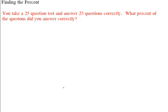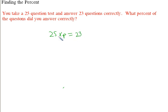Now over here — the last time I did this, I messed this up, so you really do need to be careful and pay attention. If you're trying to figure out the percent: you take a 25-question test and answer 23 questions correctly. What percent of the questions did you answer correctly? Remember, when I did this last time, I put them in the wrong places. The whole goes on this side — 25 times the percent is equal to 23, which is the part. Then all we do is divide both sides by 25.